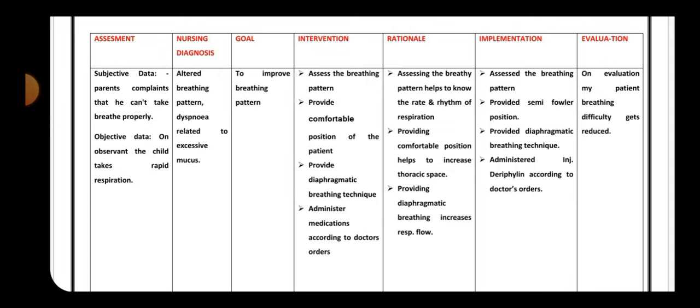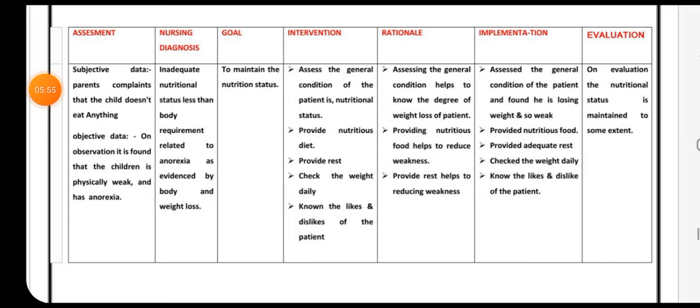Second nursing diagnosis: inadequate nutrition status less than body requirement related to anorexia, as evidenced by body weakness and weight loss. The patient's nutritional status is inadequate.